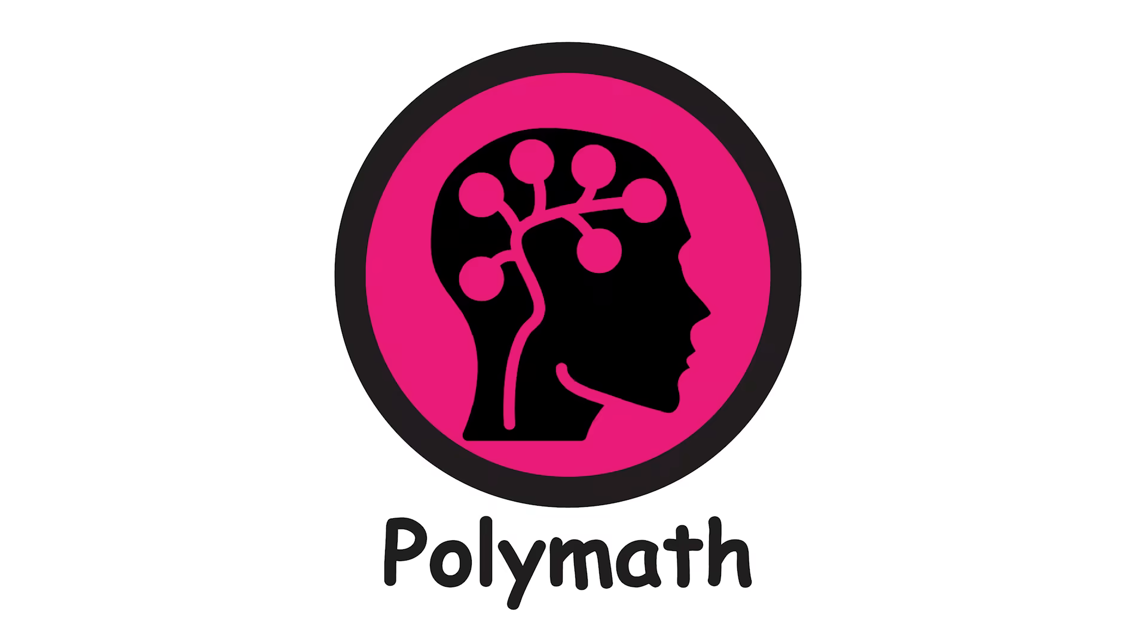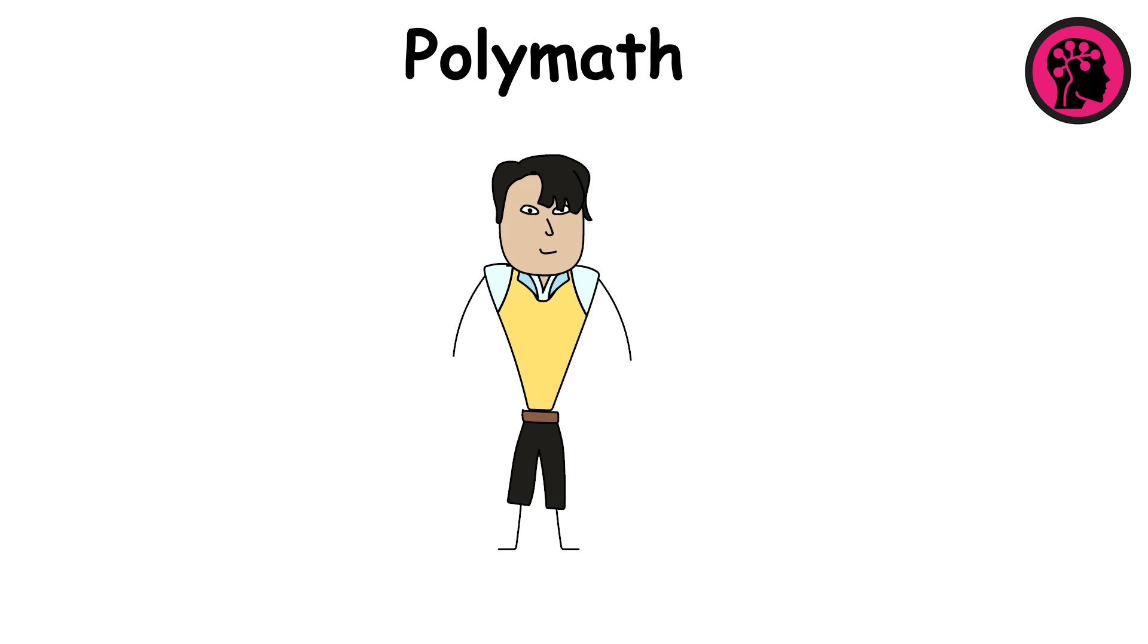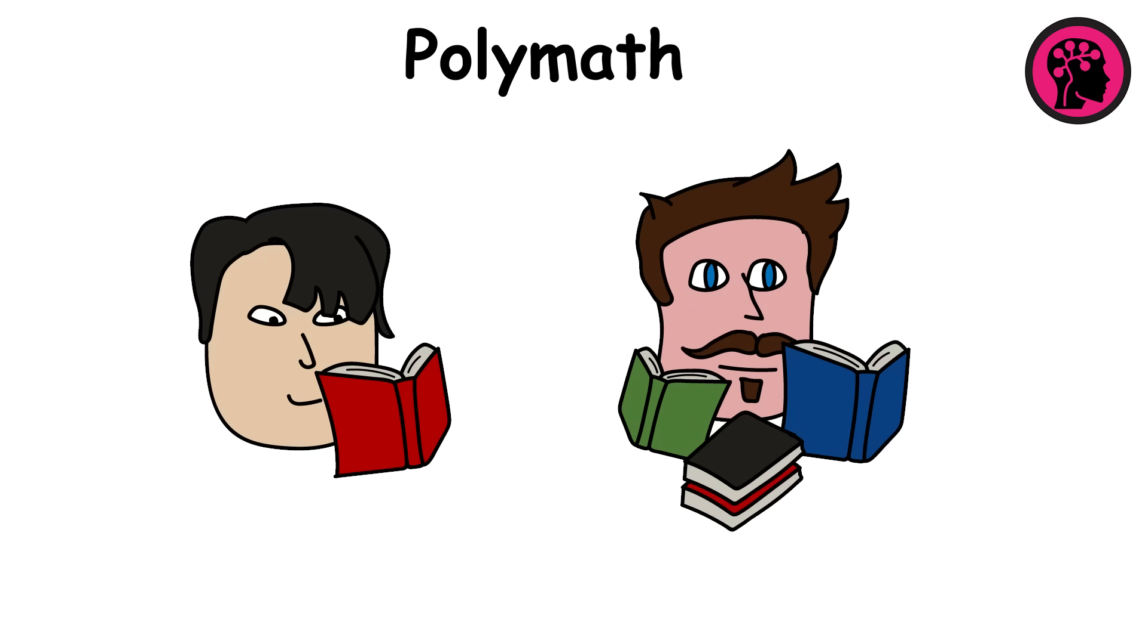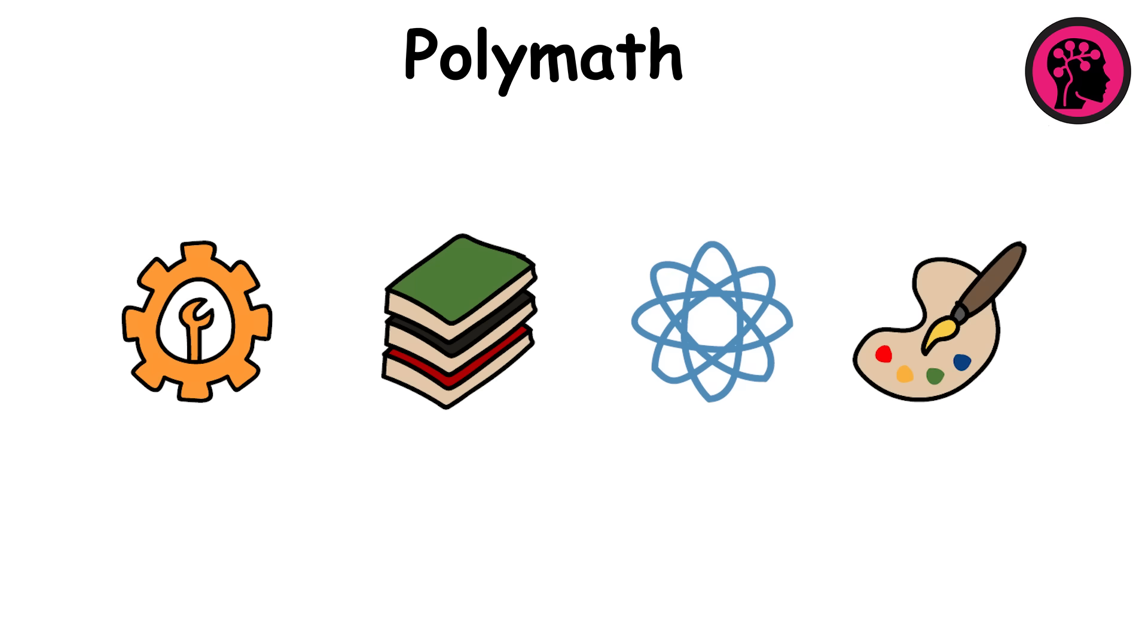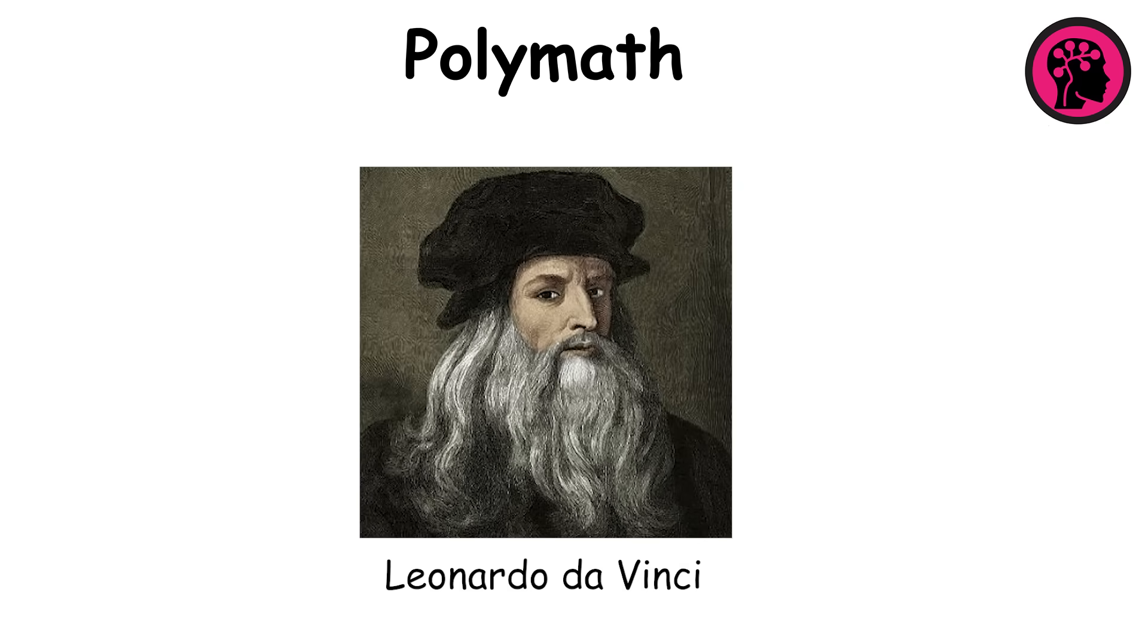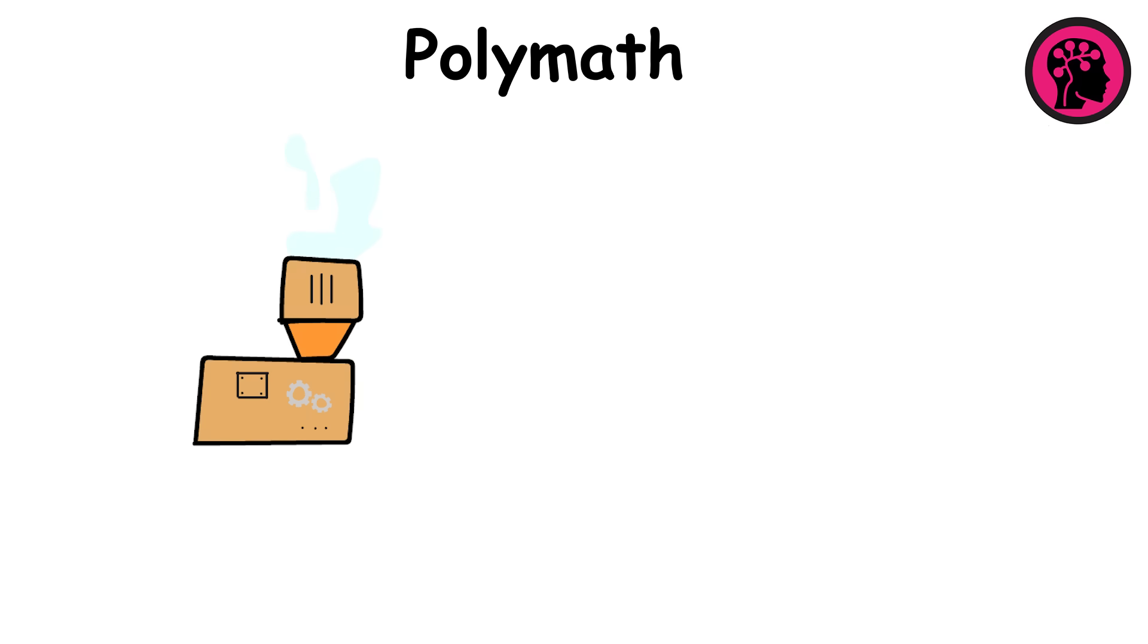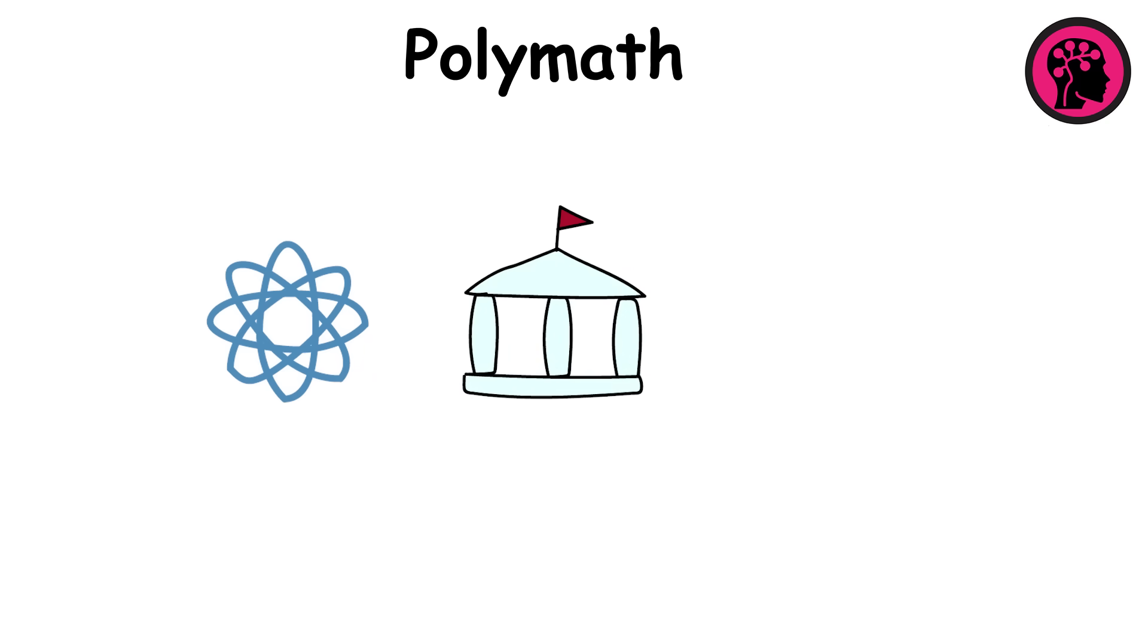Polymaths are geniuses with range. While a typical genius might master one field, a polymath masters many. They might be inventors, writers, scientists, and artists, all in one lifetime. Historical examples include Leonardo da Vinci, who designed machines, painted masterpieces, and studied anatomy. Benjamin Franklin, who helped shape science, politics, and printing.